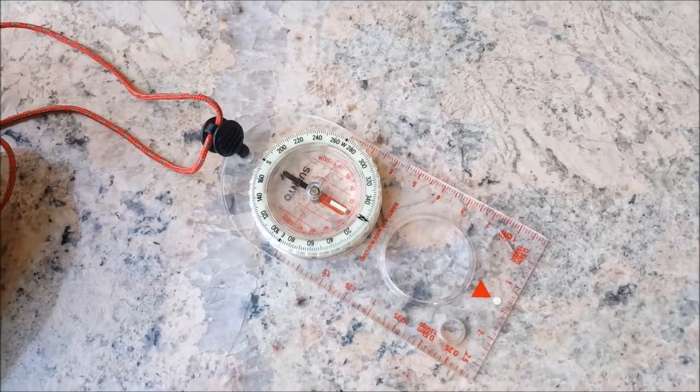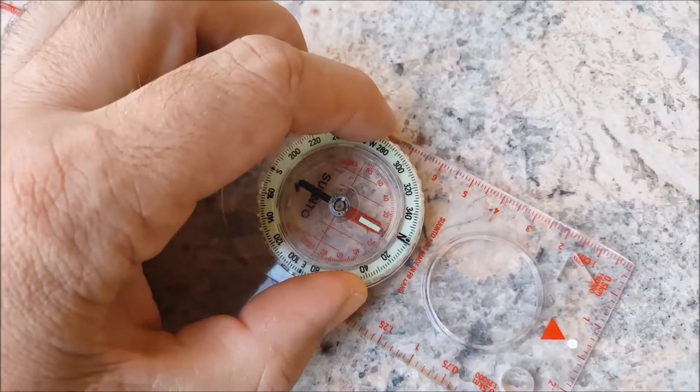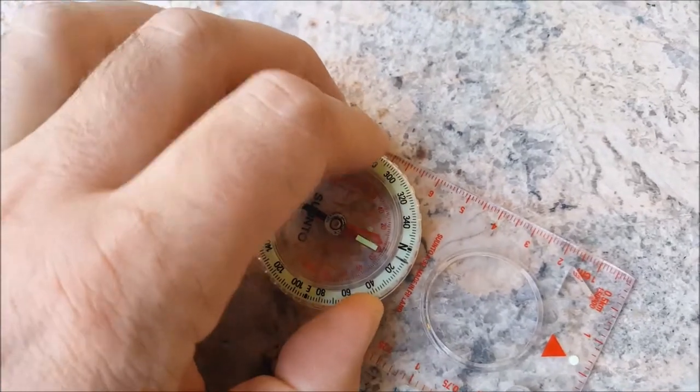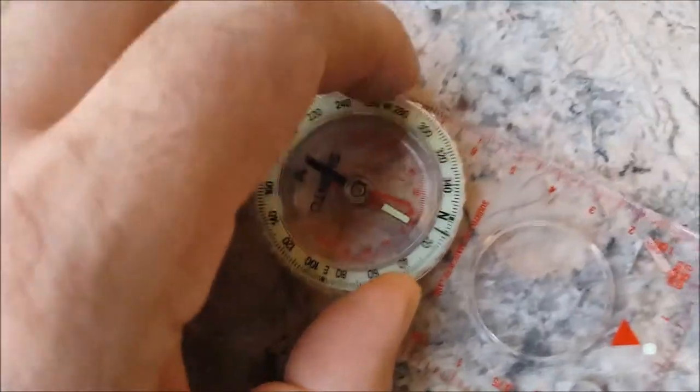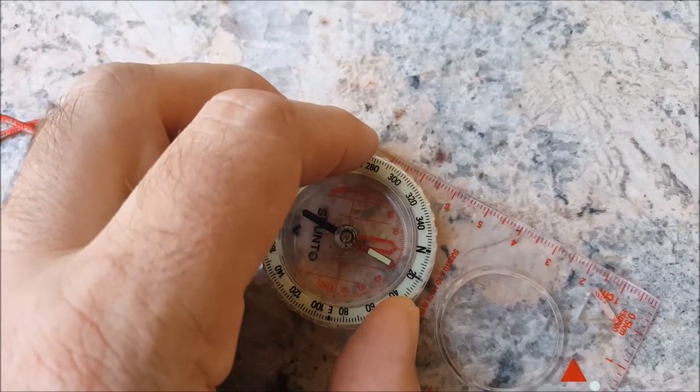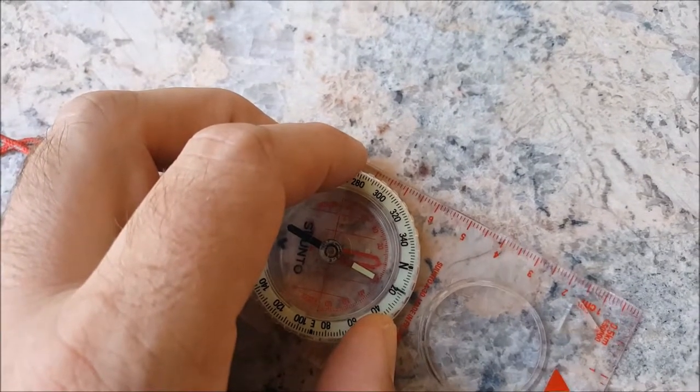So the way you adjust is you take the bezel and you rotate it so that the reading—it's kind of hard to do with one hand, I'm holding a camera with the other hand—okay, so that's 20 degrees.